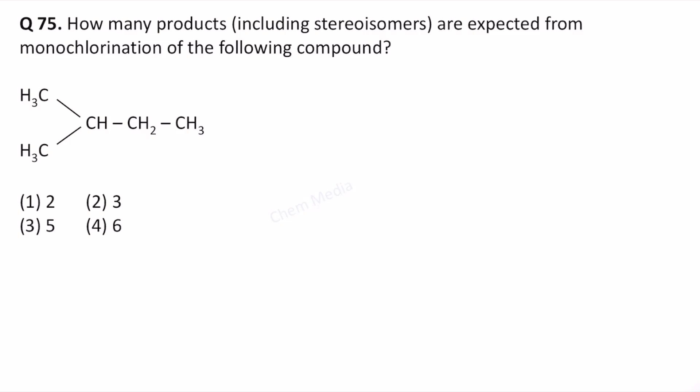Hello everyone, here is a question based on structural and stereoisomers. How many products including stereoisomers are expected from monochlorination of the following compound? We have 2-methylbutane.